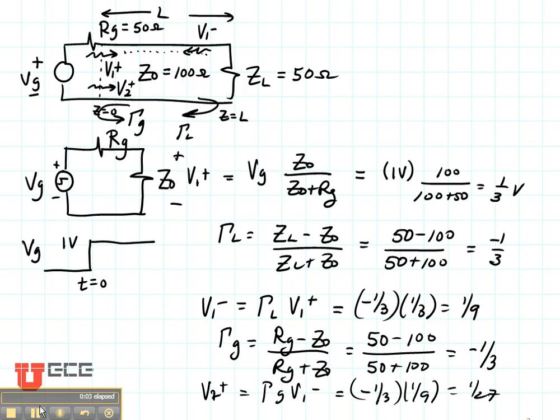The last thing that we calculated was V2 plus. That is the wave that happens when V1 minus hits the transmitting end and is reflected back into the transmission line again. That is found from the reflection coefficient at the generator, right here, gamma G, multiplied by V1 minus, which gave us a value of minus 1/27th.